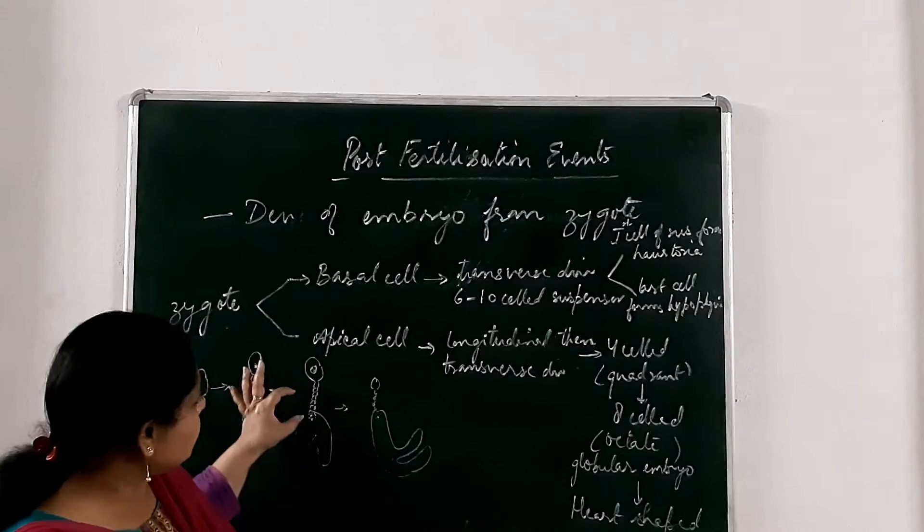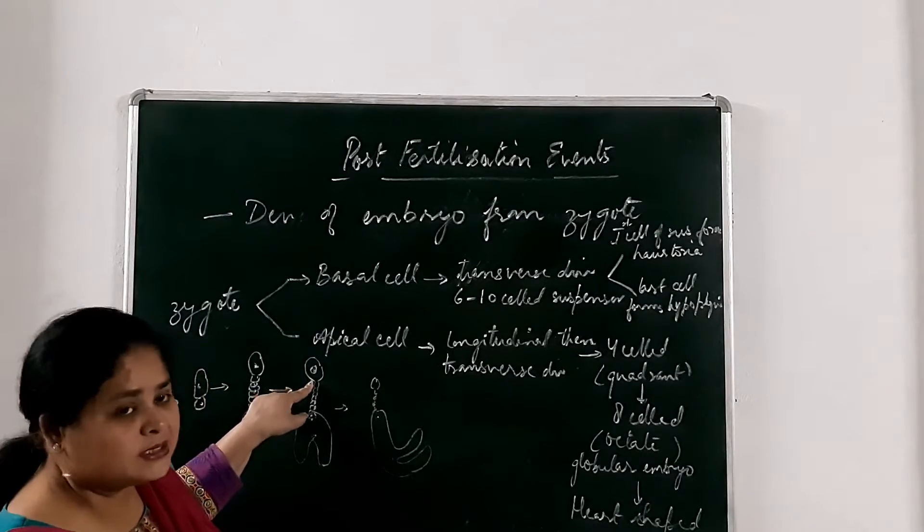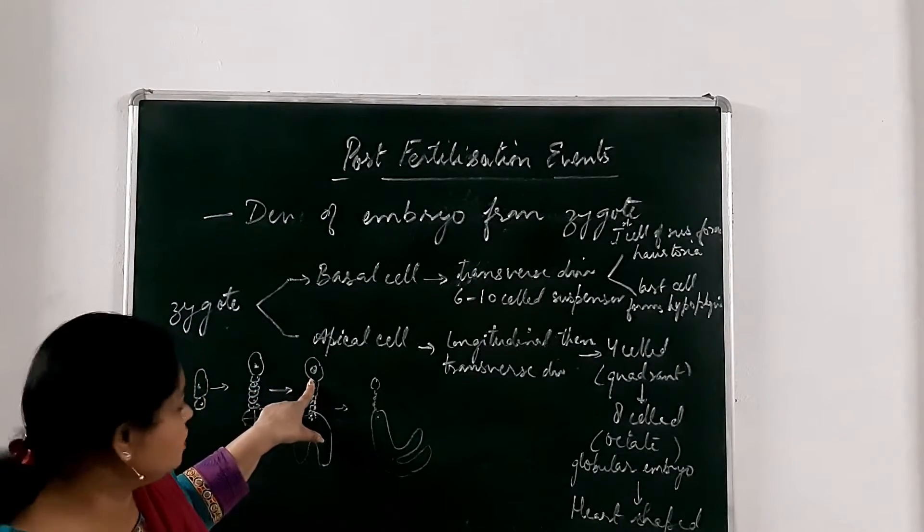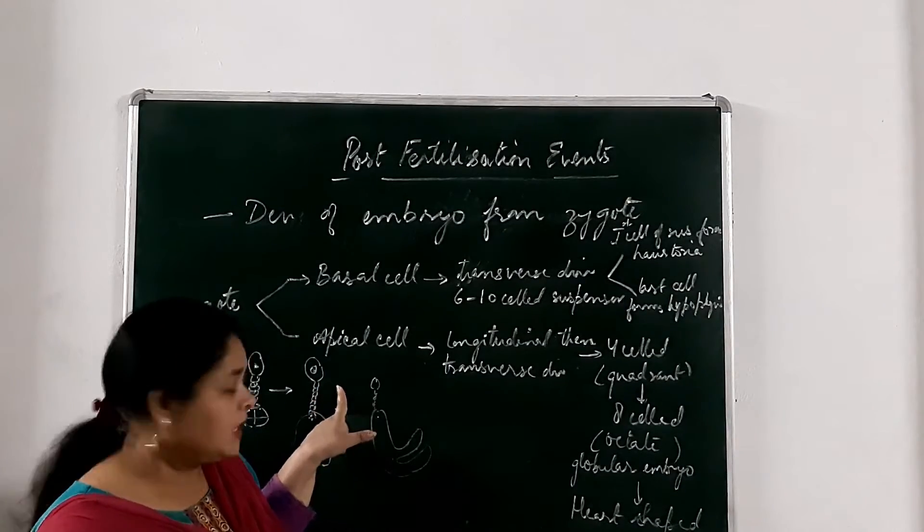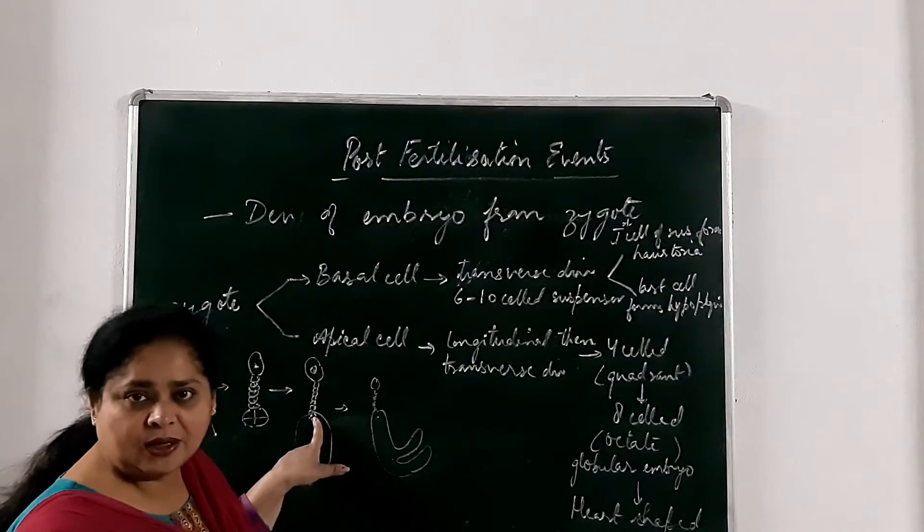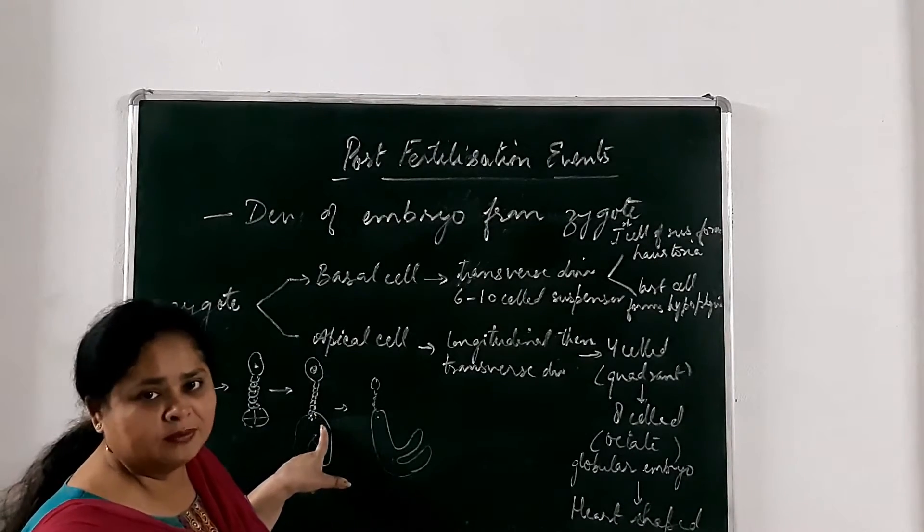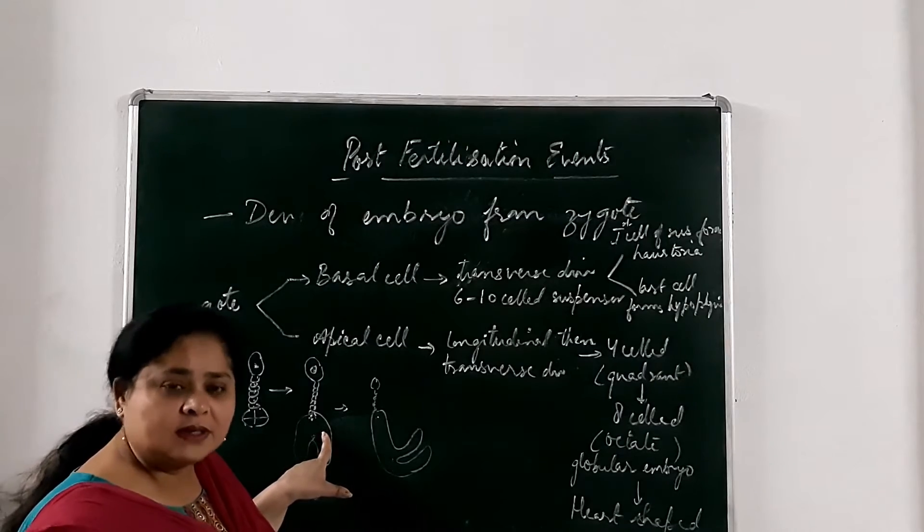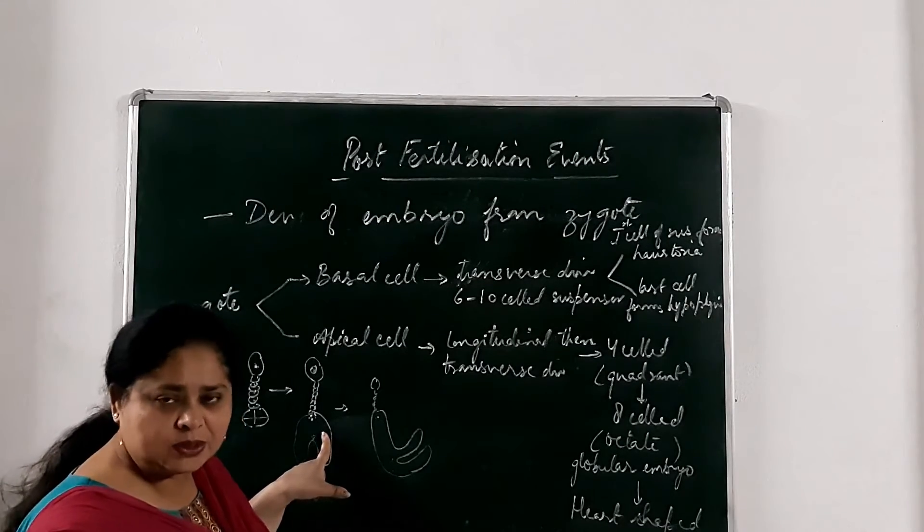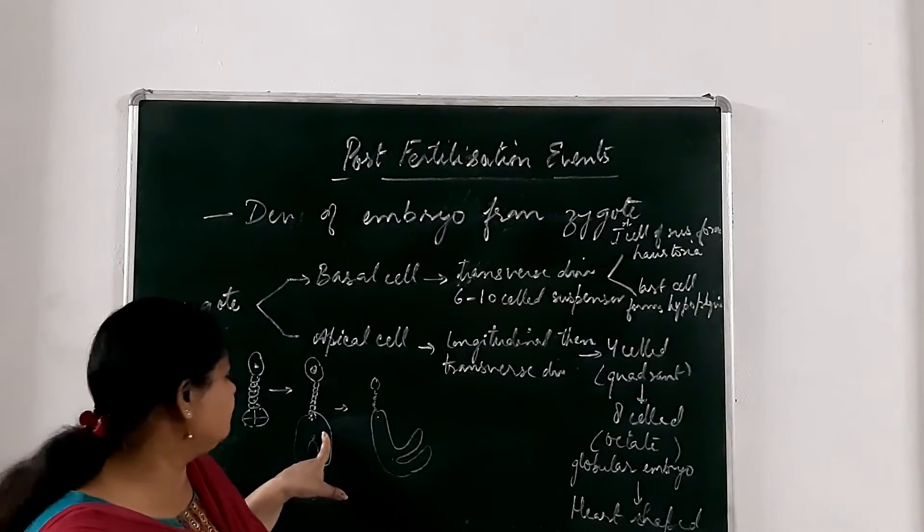After this, the first cell of suspensor which is towards the micropilar region will form the haustoria. And the last cell of the suspensor will form the hypophysis. Hypophysis which will further form the radical, the root system of the new baby plant.